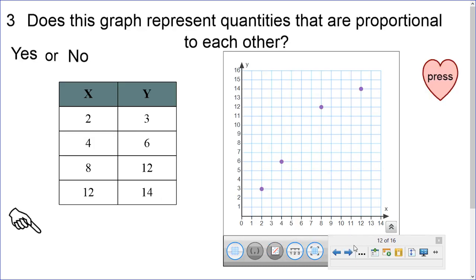So, here's a question. Does this graph represent quantities that are proportional to each other? Yes or no? So, keep in mind, you've got a table, two thirds, four, six, eight, twelve, twelve, fourteen. You should be able to tell that from the table. So, I'll give you a minute.